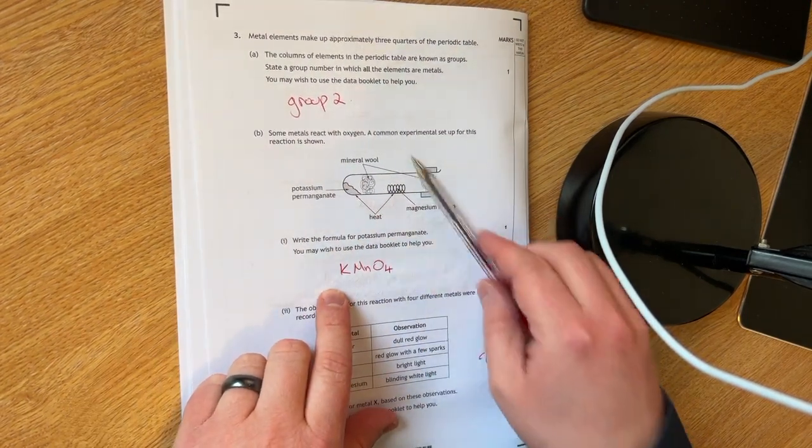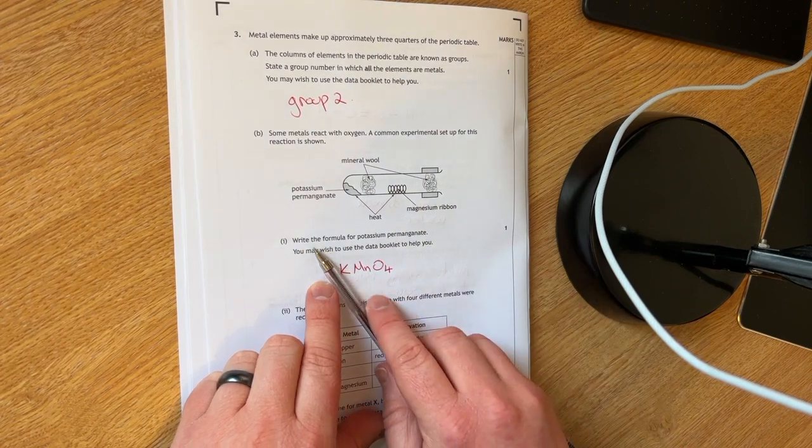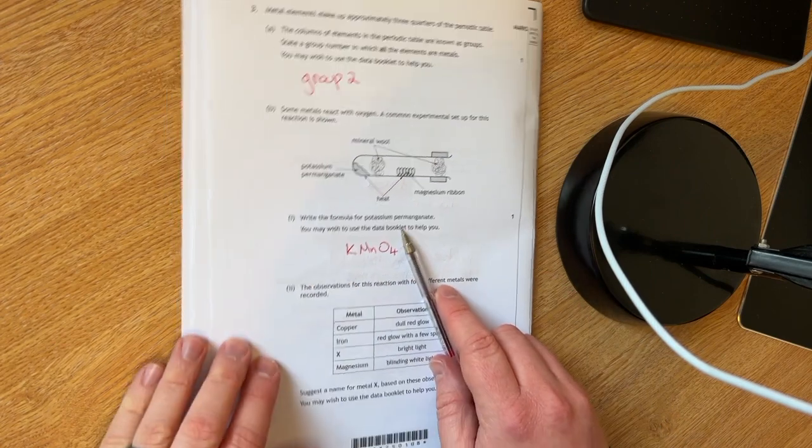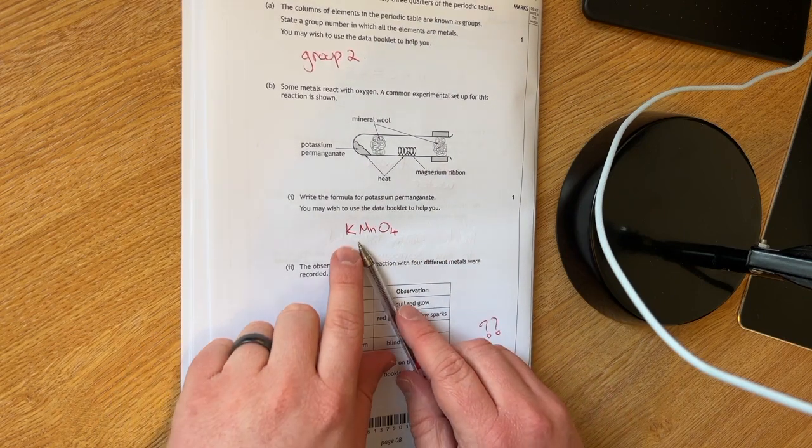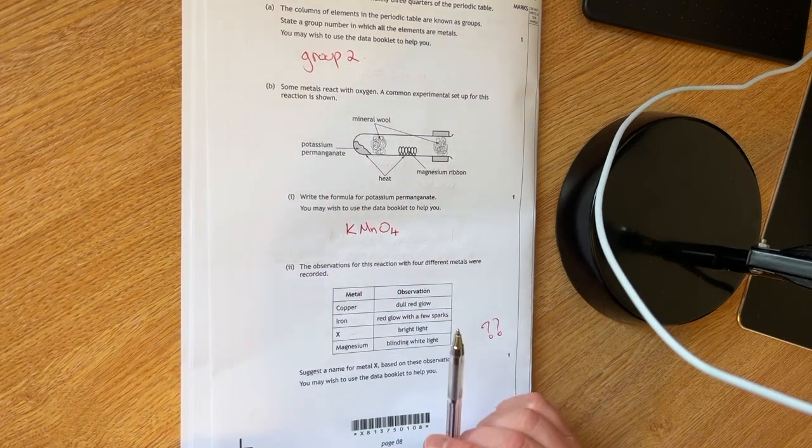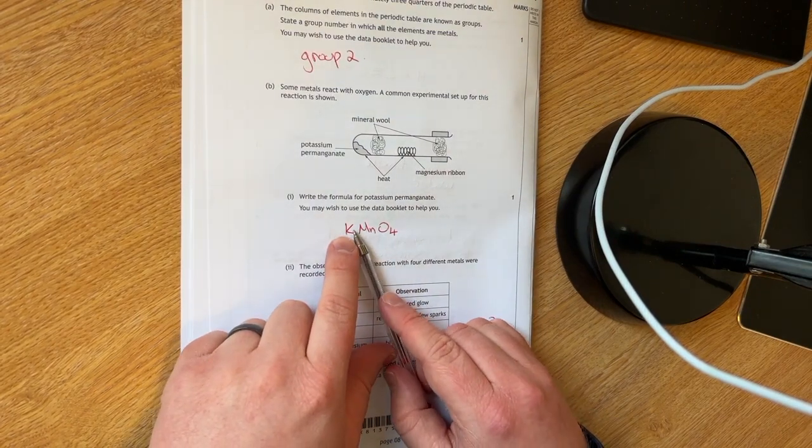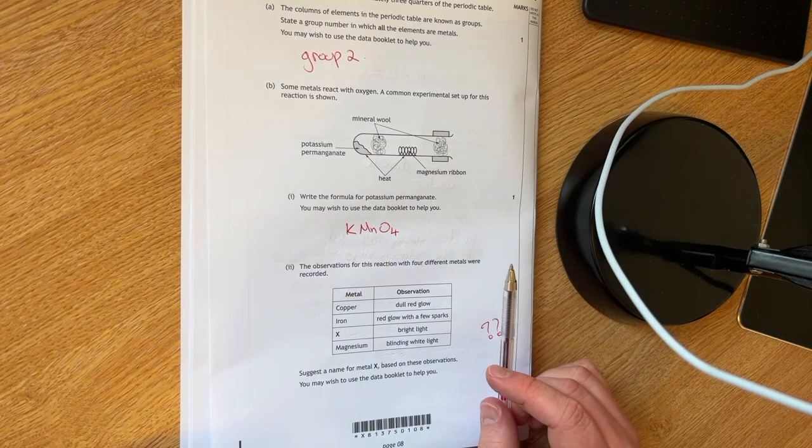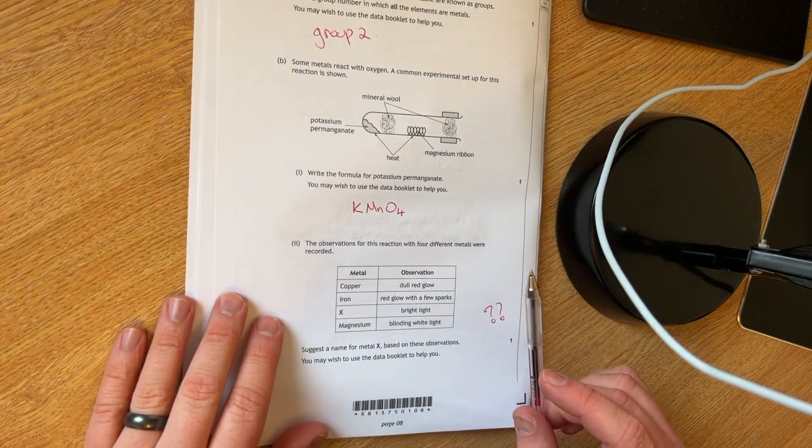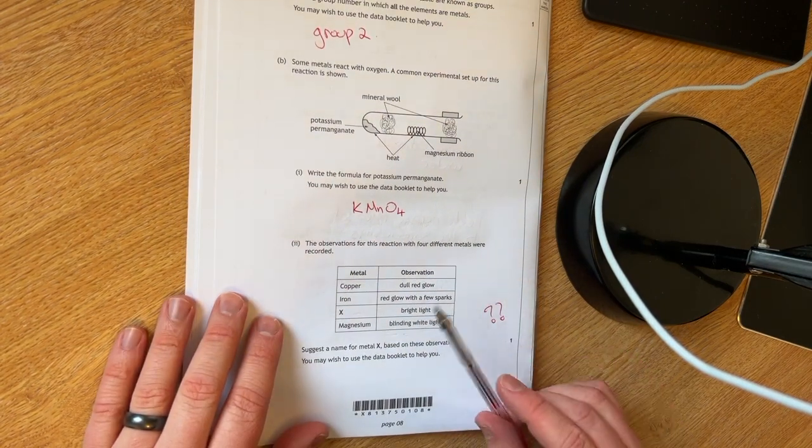You have to write the formula for potassium permanganate. You may wish to use the data booklet to help you. The formula is KMnO4. The potassium has a positive charge and permanganate's got a negative charge, MnO4 minus.